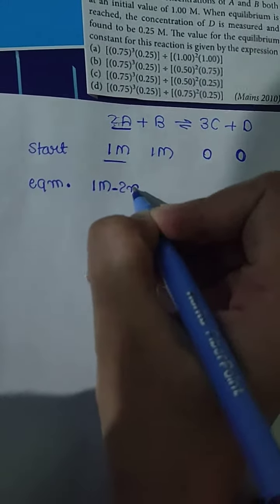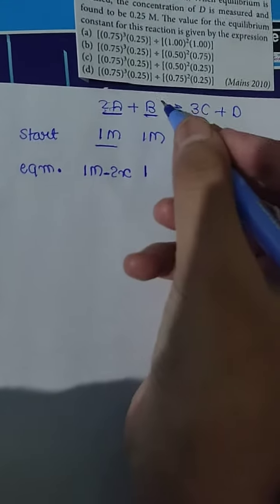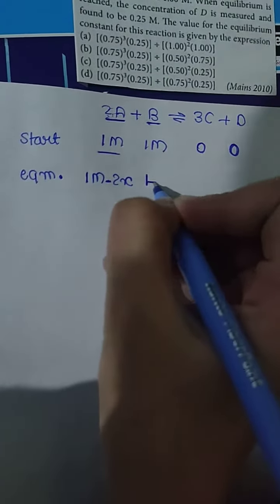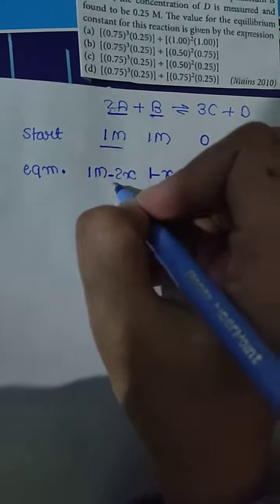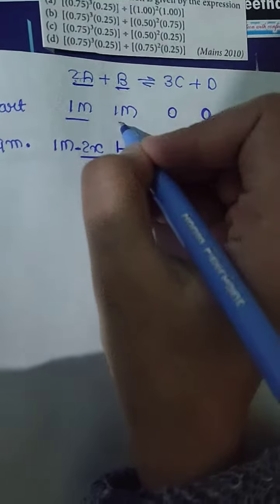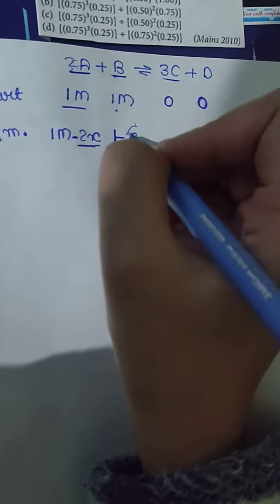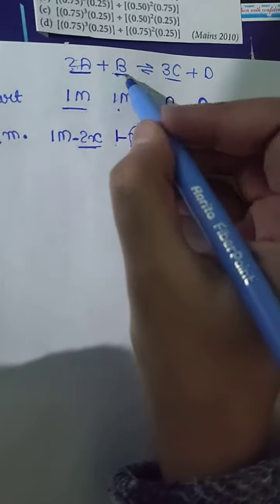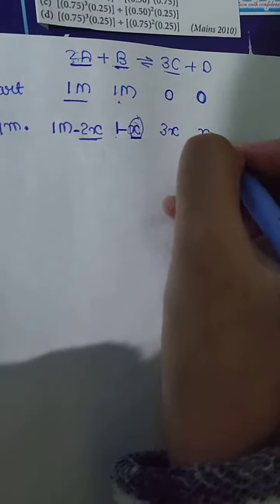For B, if the degree of dissociation is x, then x moles break down, leaving 1 minus x at equilibrium. For A, 2x reacts, leaving 1 minus 2x at equilibrium. From 1 mole A and 1 mole B, 3 moles of C form, so x moles of A give 3x moles of C. Similarly, x moles of B give x moles of D.